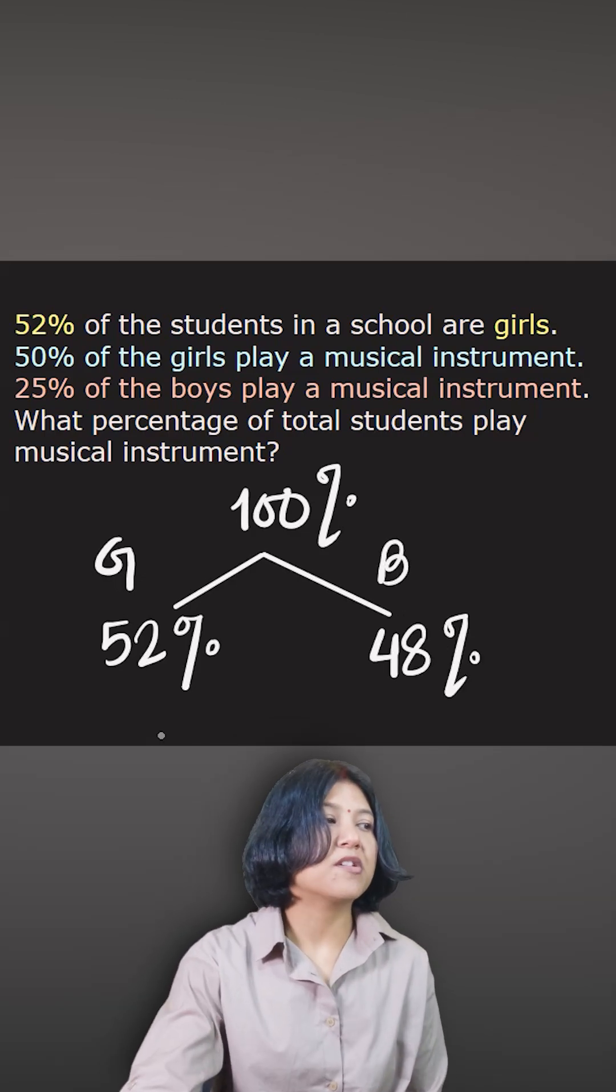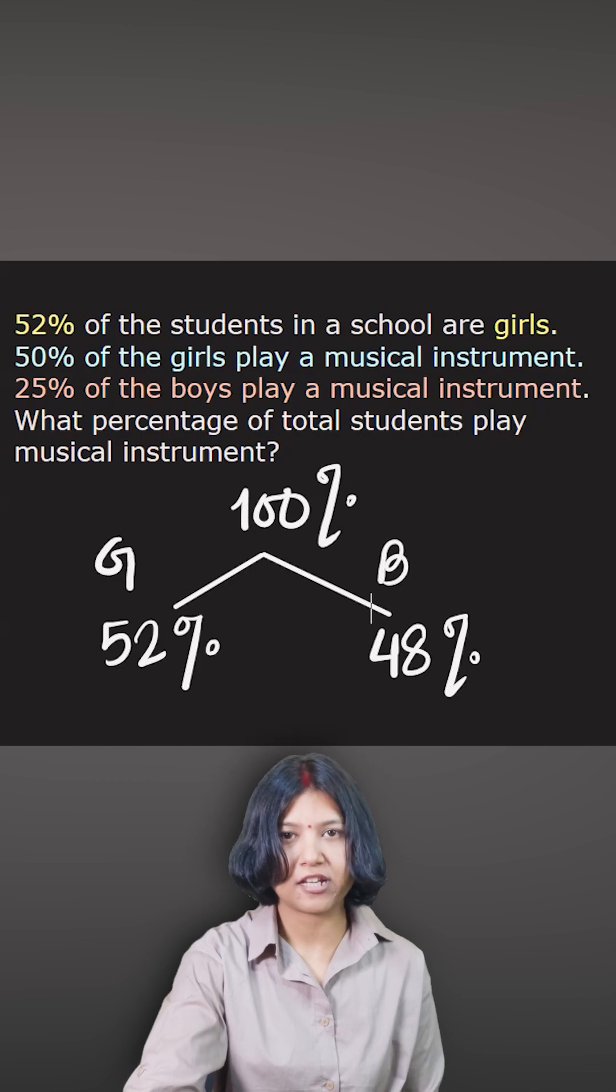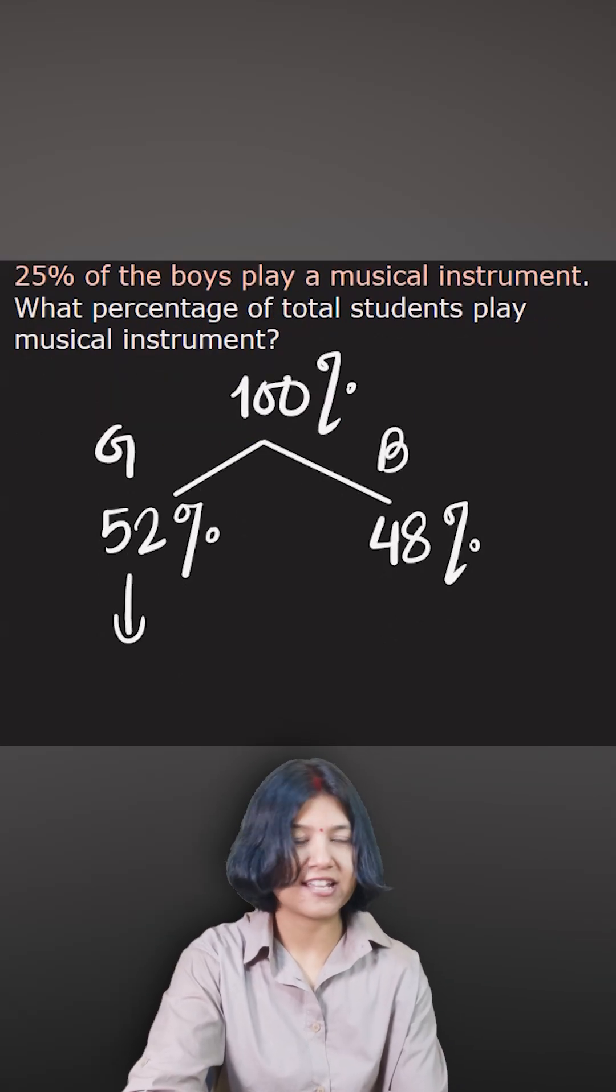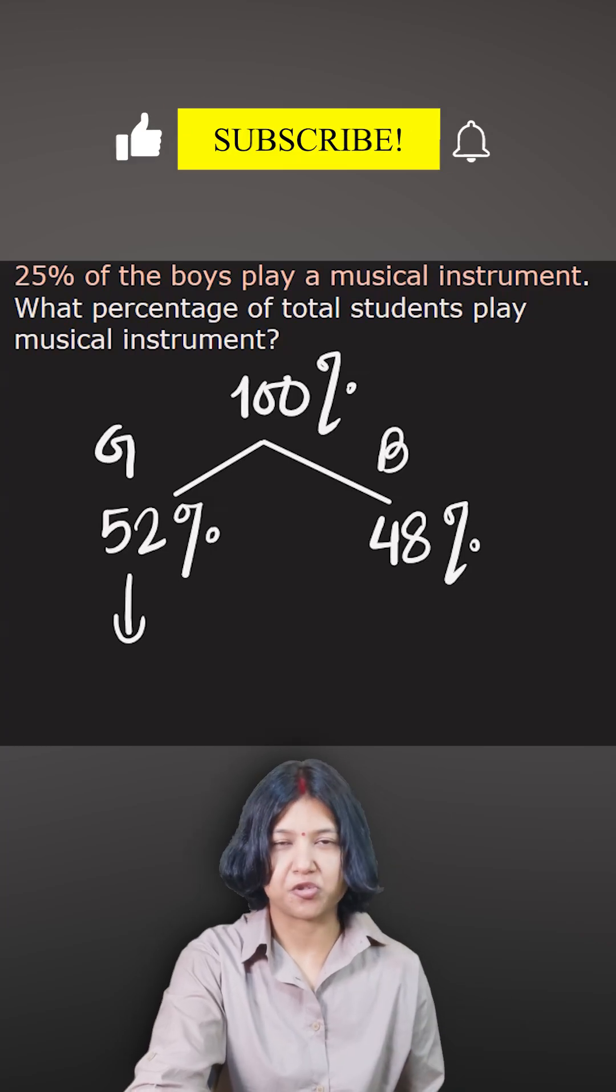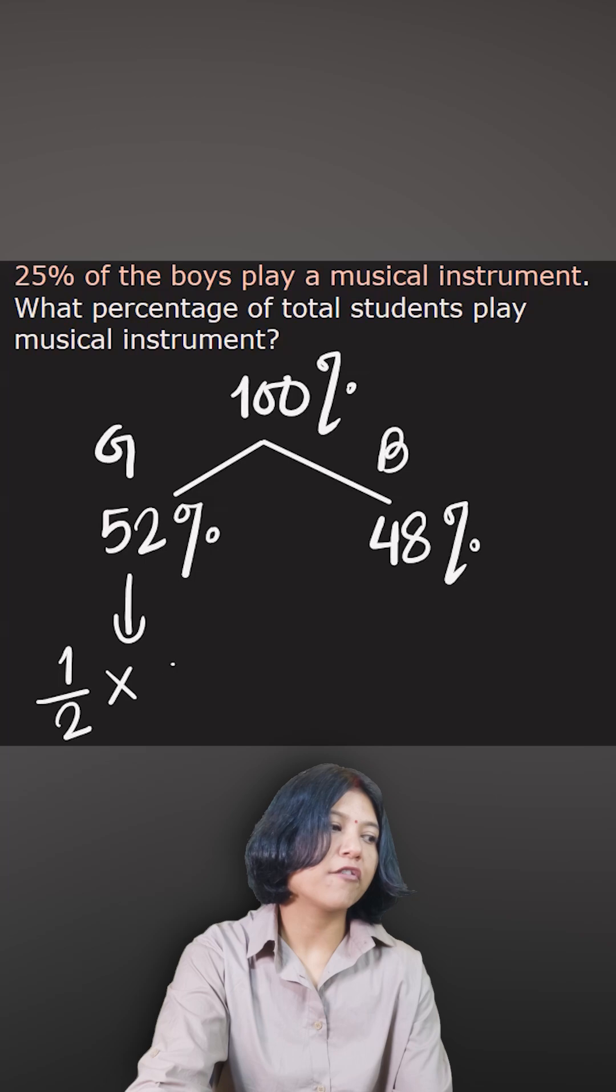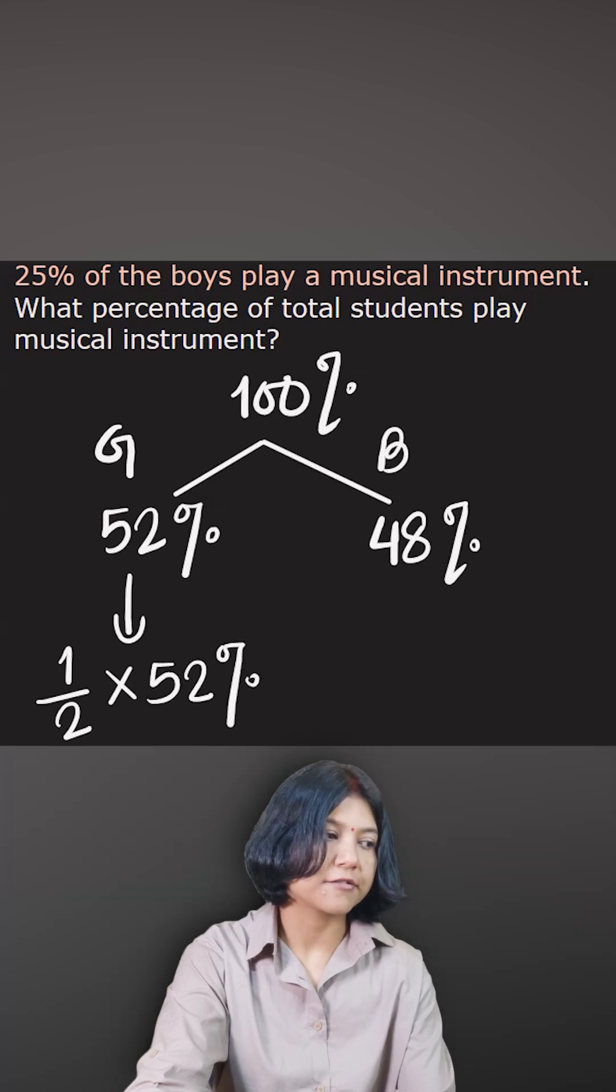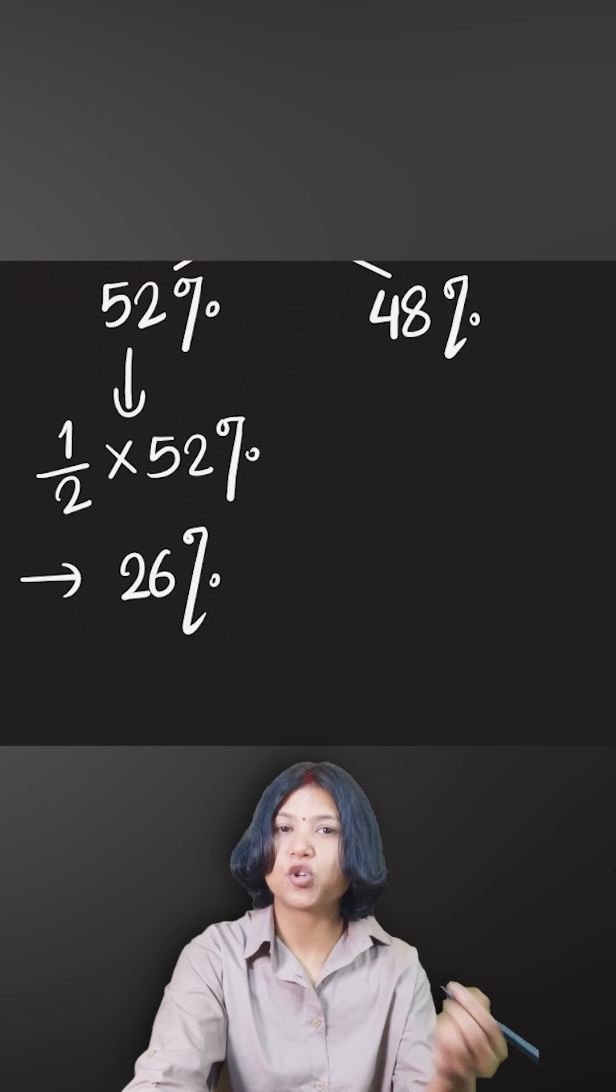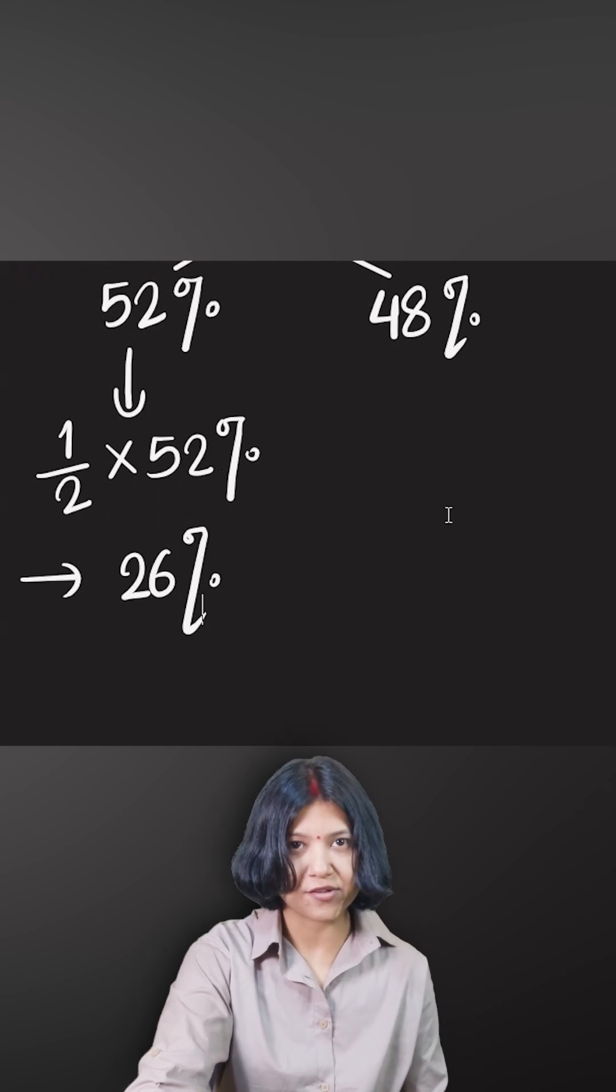And now question says 50% of the girls play a musical instrument. So now 50% of 52. Remember, 50% is now you want to convert one of the percentage into fraction. 50% is just half, right? So now half of 52%. How much is that? It is simply 26%. So I know that 26% of the total students are girls who play musical instrument.